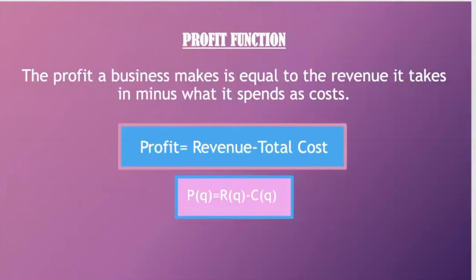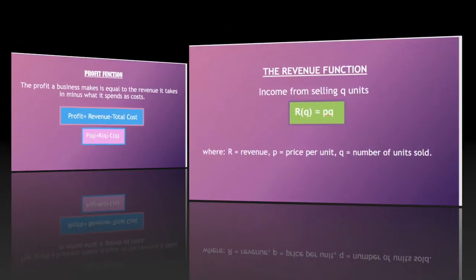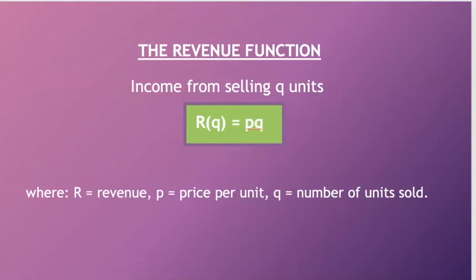Profit is revenue minus the total cost function. To find the marginal profit, we will have to differentiate the profit function, which we're going to do today. Last week I had looked at revenue, where revenue is price times quantity. So this is just a reminder of how we find revenue — the income from selling Q units.